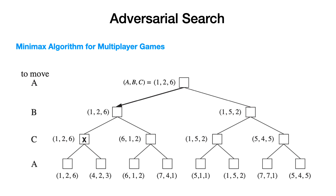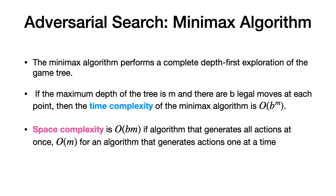The time complexity of minimax is O(b^m), where b is the branching factor and m is the depth of the tree. Space complexity is O(bm), similar to depth-first search. There is a more efficient algorithm called alpha-beta pruning, which improves upon minimax and will be discussed in the next video.